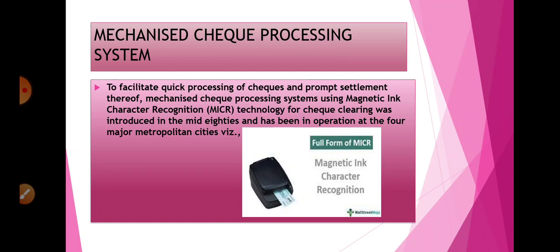The mechanized check processing system using Magnetic Ink Character Recognition technology for cheque clearing was introduced in the mid-1980s and has been in operation in four major metropolitan cities. The MICR technique uses magnetic ink for printing information on cheques. This information can only be read by a computer. The required information is printed on a special area of the cheque called the MICR band, which is located at the bottom line of the cheque.